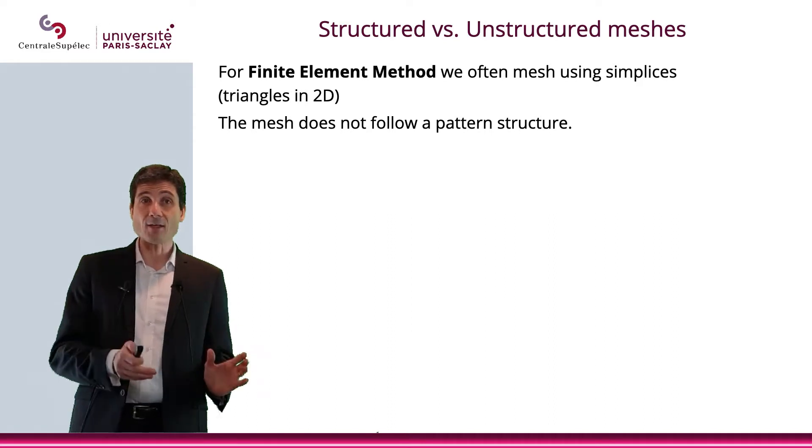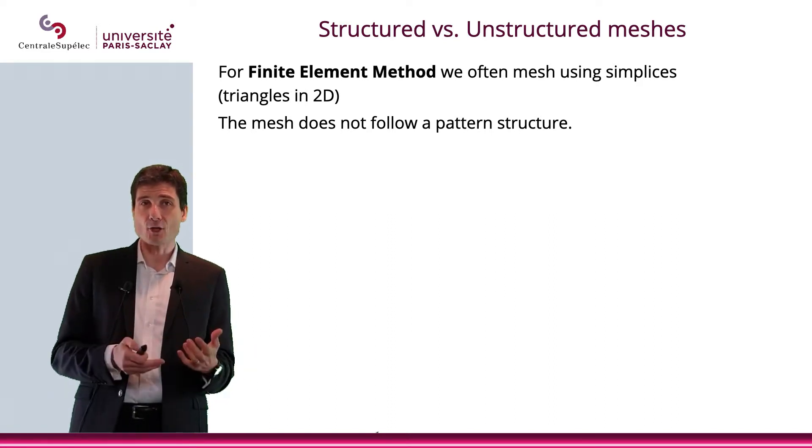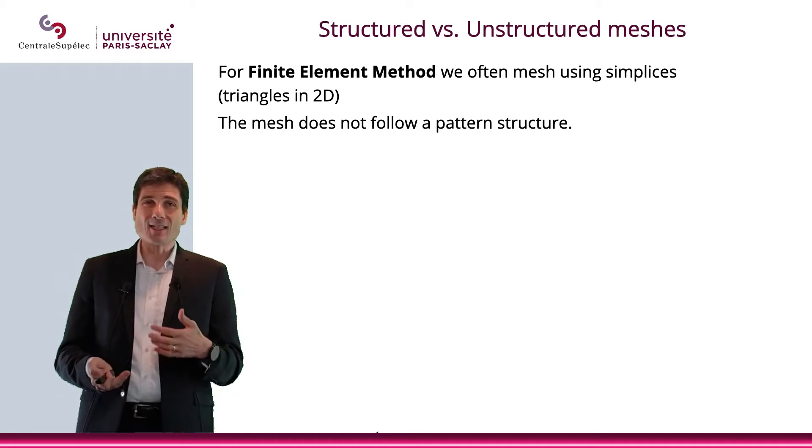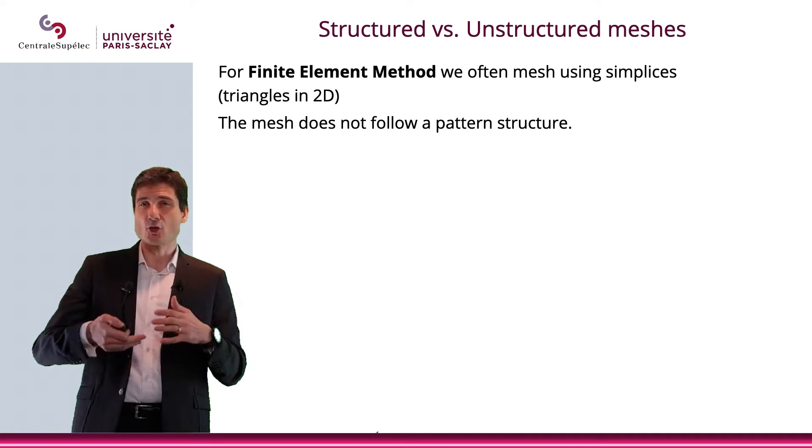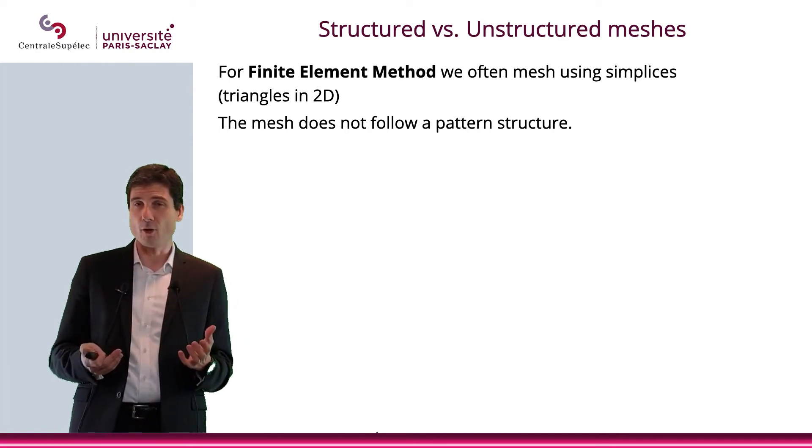As you know, when we do the finite element method, we usually use simplices. So in dimension 2, that will be triangles. Which means that the mesh does not really have a structure. You already saw that there are basically triangles all over the place.